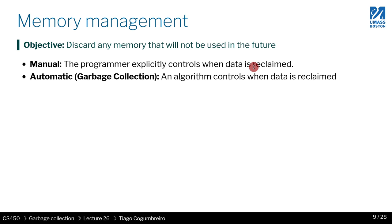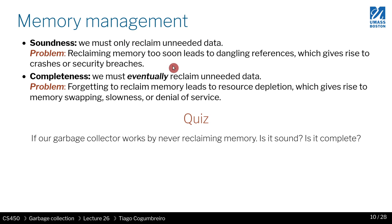There are even programming languages that do something in the middle. The problem with C is that you can have a library, but you can still ignore using it and still have problems such as memory leaks. But there are other languages, such as Rust, which give you both manual and automatic memory management without the problem of memory leaks.